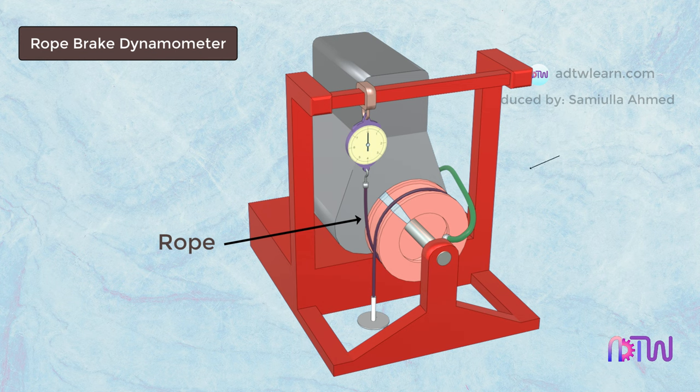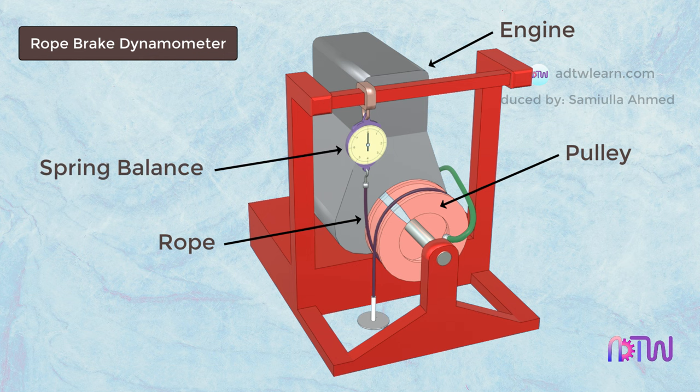The rope is wound around the pulley connected to the engine, and one end of the rope is connected to the spring balance, and a deadweight W is hung on the other end of the rope.